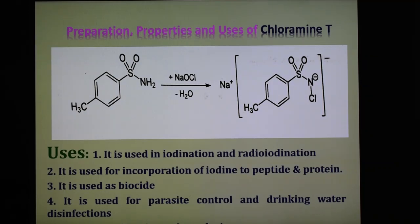The preparation and properties of Chloramine T are as follows. Chloramine T is prepared from para-toluene sulphonamide and sodium hypochlorite, produced from sodium hydroxide.